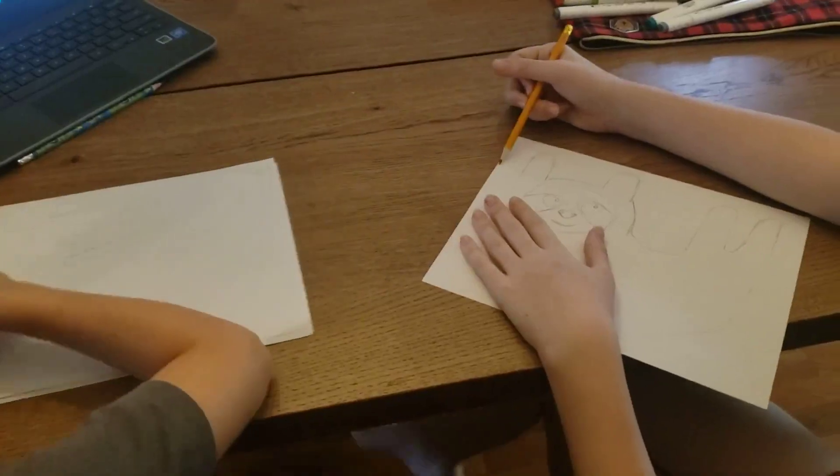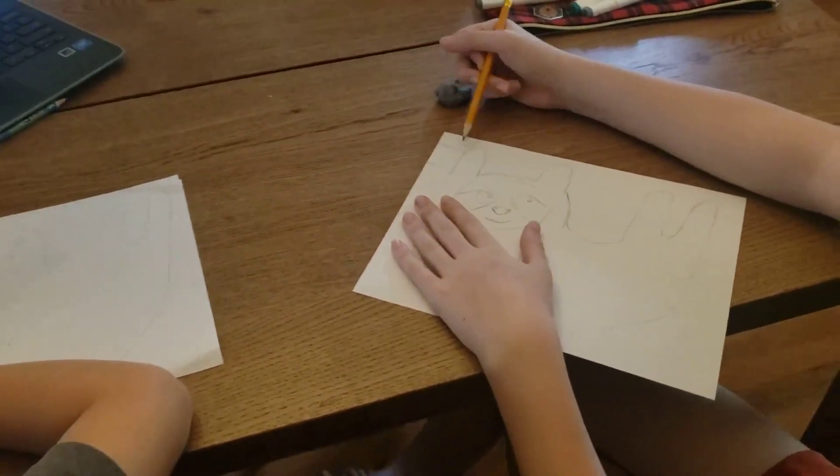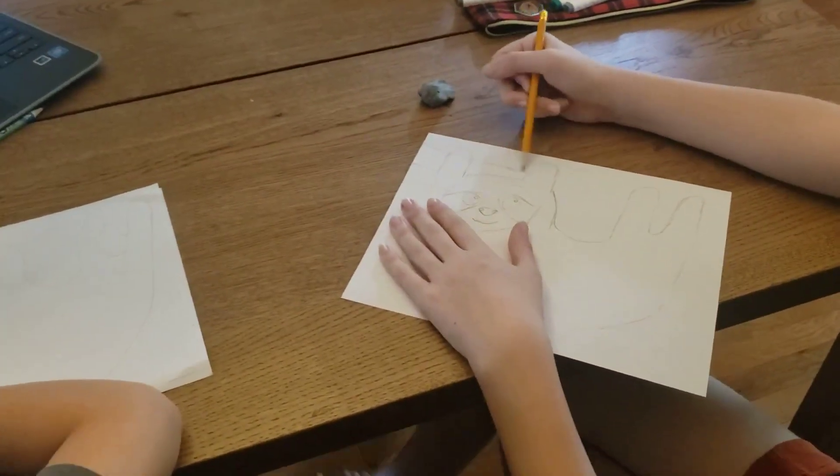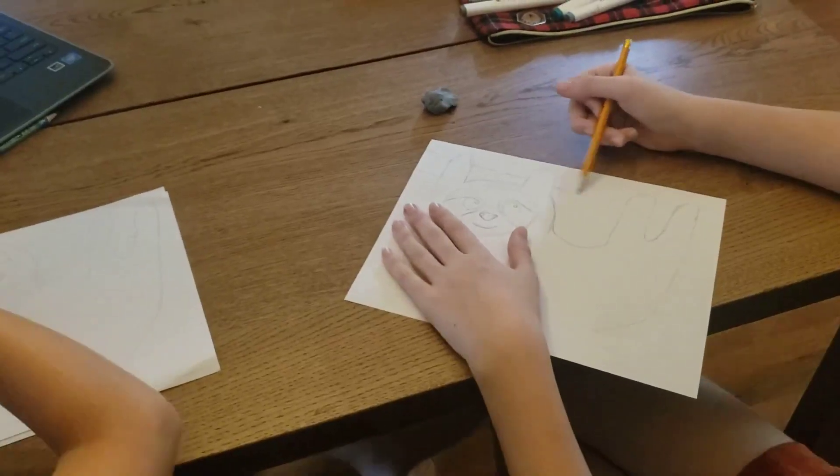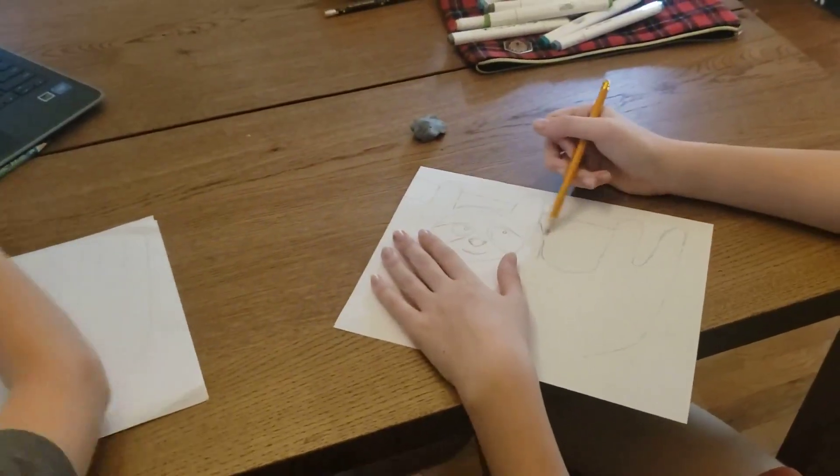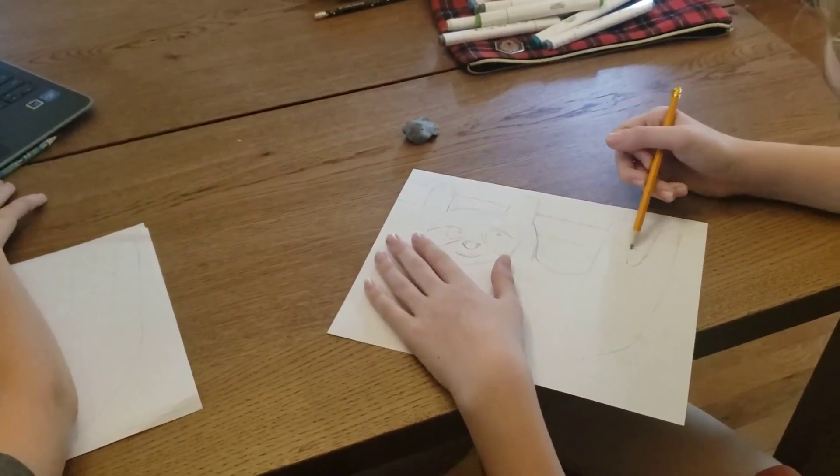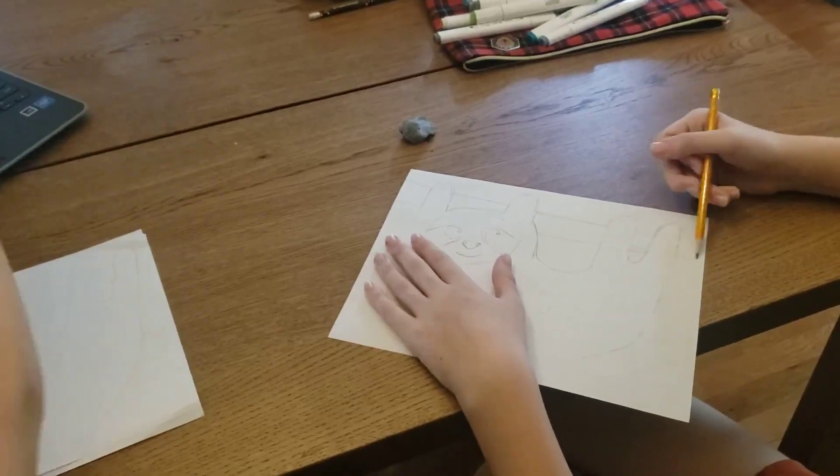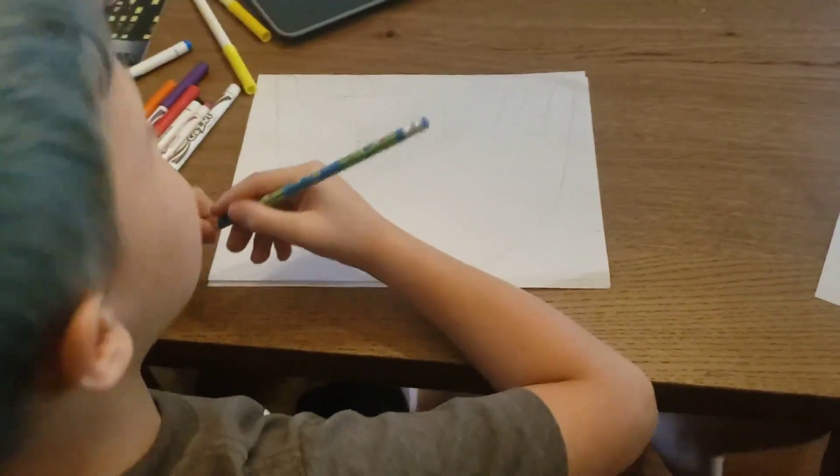And what about the background? For mine, for the background, I add a little branch so he's holding on to a branch. Mine can hold on to a branch. What's yours going to hold on to? A branch?